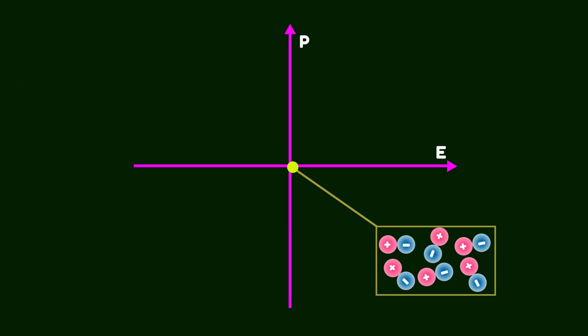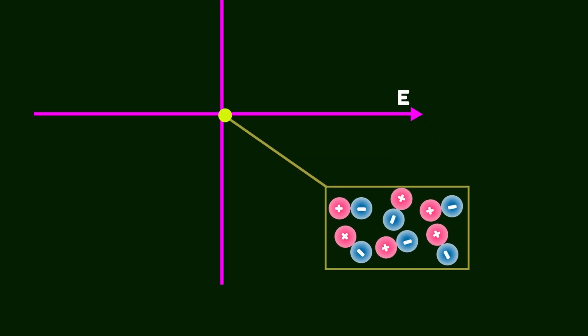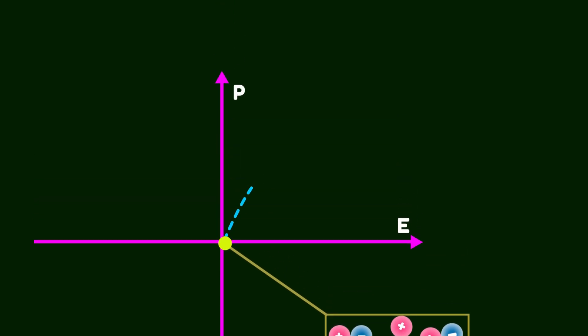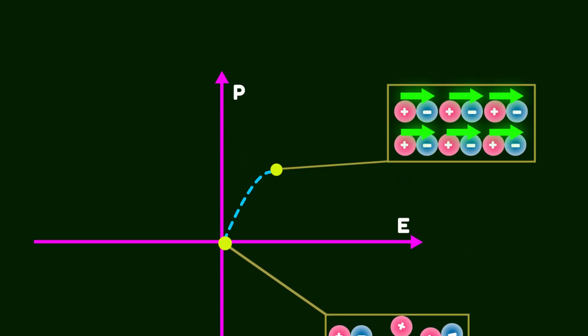Imagine this is a ferroelectric compound. Without applying an electric field it has no net dipole moment. Now let's apply an external field. As you can see, the dipole moments align themselves with the field. And at some point, the polarization reaches maximum value. Beyond this point, increasing the field further doesn't change the polarization.